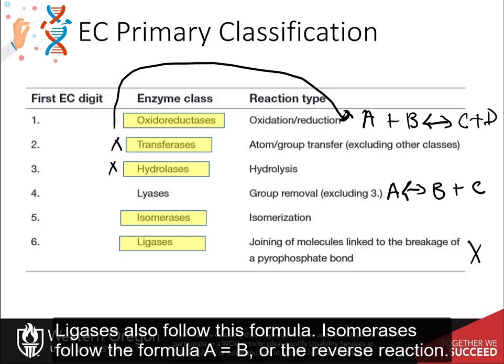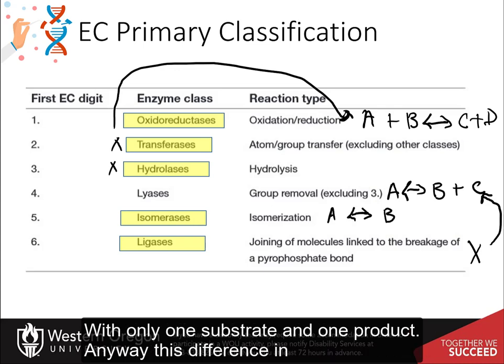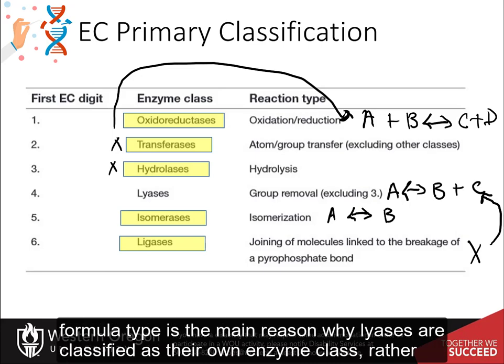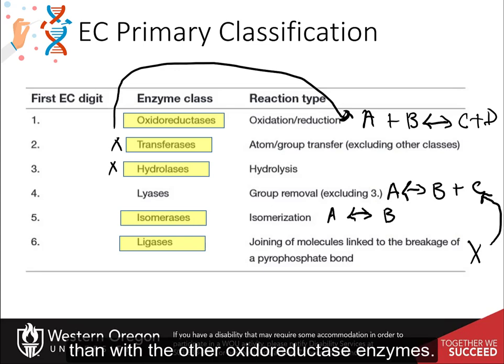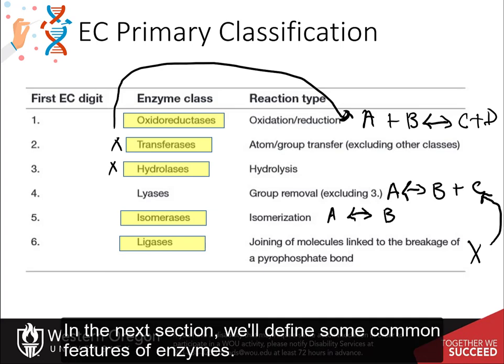Ligases also follow the A → B + C formula type. Isomerases follow the formula A → B, with only one substrate and one product. This difference in formula type is the main reason why lyases are classified as their own enzyme class rather than with the other oxidoreductase enzymes.